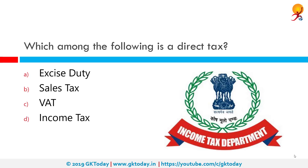Which among the following is a direct tax? The correct answer is income tax. A direct tax is a tax directly paid to the government by the individuals or organizations on whom it is imposed. The main examples are income tax, gift tax, wealth tax, etc.